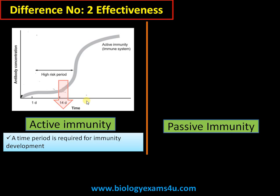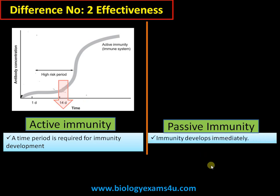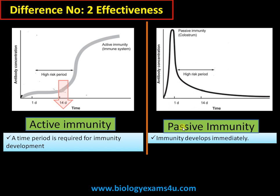Whereas in the case of passive immunity, immunity develops all of a sudden. We are injecting pre-made antibodies into the system, so antibodies are in circulation immediately. It is very fast.